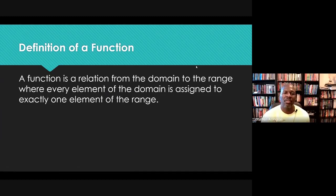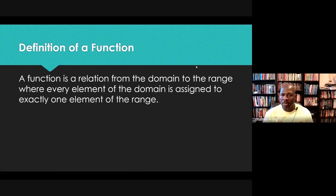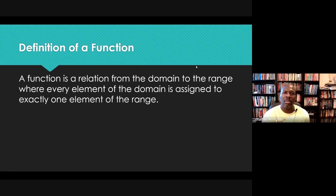If a particular element in the domain can have more than one element in the range assigned to it, when you put that input you don't know what your output is going to be. On a function, for every input I get a unique output — that's what separates functions from other relations. It gives us a certain level of certainty; if there were multiple outputs for a particular input, there's a sense of uncertainty.